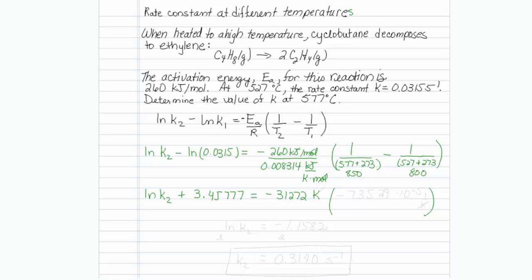This turns out to be negative 7.3529 times 10 to the minus 5, in units of per kelvin, because those cancel out. A little more math, and natural log of k2 is equal to negative 1.1582. Taking both sides to the e power, k2 is equal to 0.3140 per second.